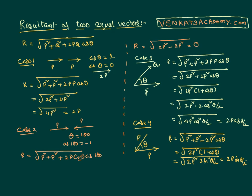You might have noticed that in all these problems, every time the vectors have the same magnitude but the directions are different, the resultant is different every time. So it is very clear from these examples that the summation of vectors depends not only on the magnitude but also on the direction.